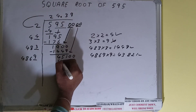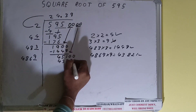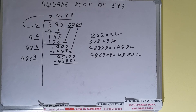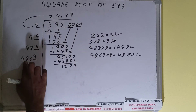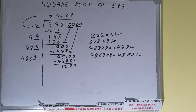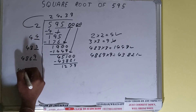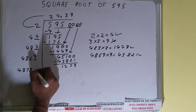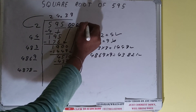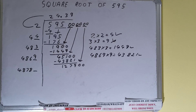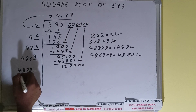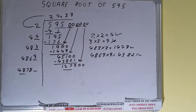4869 plus 9 will be 4878. Bring the next pair of zeros down and it will become 127900. Compare 48 with 127, so we can try two times.